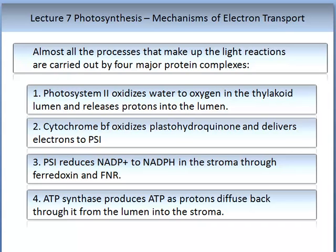Almost all the processes that make up the light reactions are carried out by four major protein complexes: Photosystem 2, cytochrome BF, Photosystem 1, and ATP synthase. In summary: Photosystem 2 oxidises water to oxygen in the thylakoid lumen and releases protons into the lumen. The cytochrome BF oxidises plastohydroquinone and delivers electrons to Photosystem 1. Photosystem 1 reduces NADP+ to NADPH in the stroma through the ferredoxin and FNR complex. ATP synthase produces ATP as protons diffuse back from the lumen into the stroma.